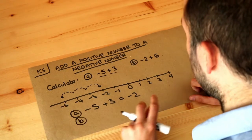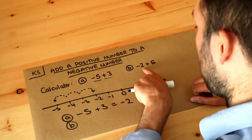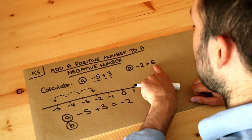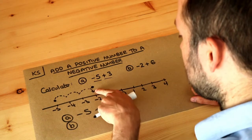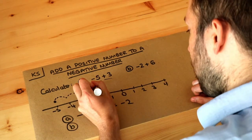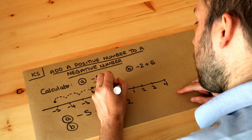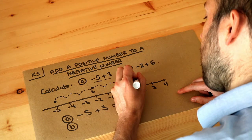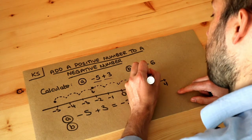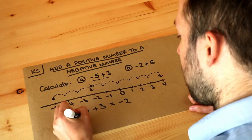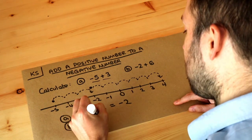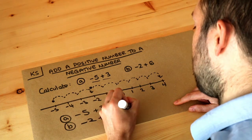And then for B, we want to start at minus 2 and then add 6, so go up 6. So we're starting at minus 2 here, and we're going to add 6. So 1, 2, 3, 4, 5, 6. And we're now at 4. So minus 2, when we add 6 to it, we end up at 4.